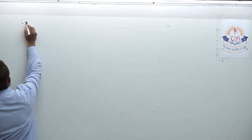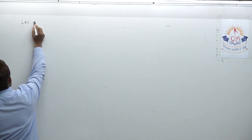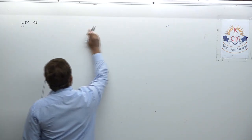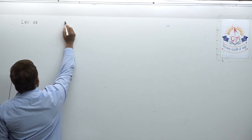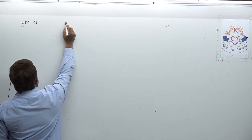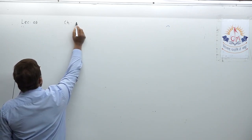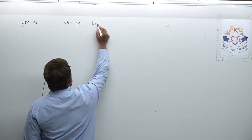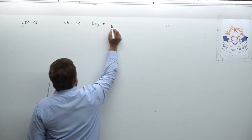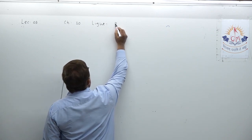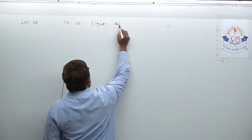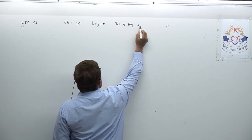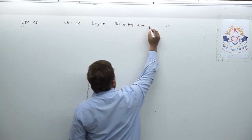Today is lecture number 3. In lecture number 3, chapter number 10 — light, reflection and refraction — we are concentrating on the topic of reflection of light.